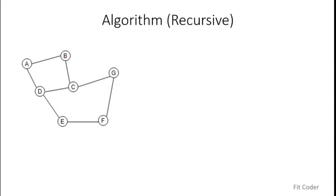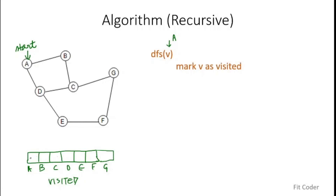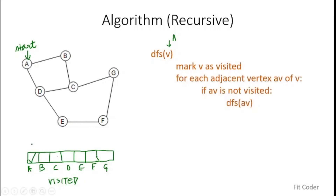We've seen the iterative approach for DFS. Now let's see how to implement the same algorithm via recursion. As you know, recursion uses an implicit stack, so instead of an explicit external stack, we use the implicit call stack. We maintain an array to keep track of visited nodes, with A as the start element. The recursive DFS function takes the start node, marks it as visited, and for each adjacent unvisited vertex, calls DFS recursively.